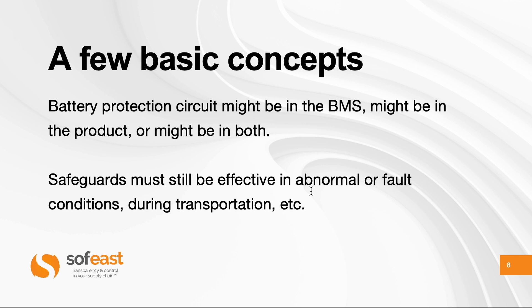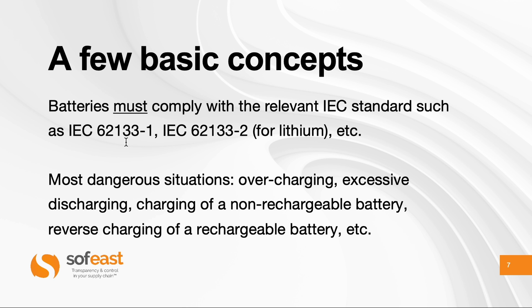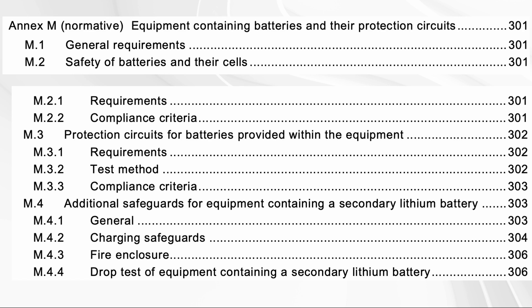This standard has a long list of safeguards for batteries in various situations. They have to be effective not just in normal situations but also in abnormal situations and fault conditions — for example, when a product is transported. There is an entire Annex M in the standard that covers equipment containing batteries. Note that this standard is not about the safety of the batteries themselves; there are specific standards for that. This is about the devices that include a battery.